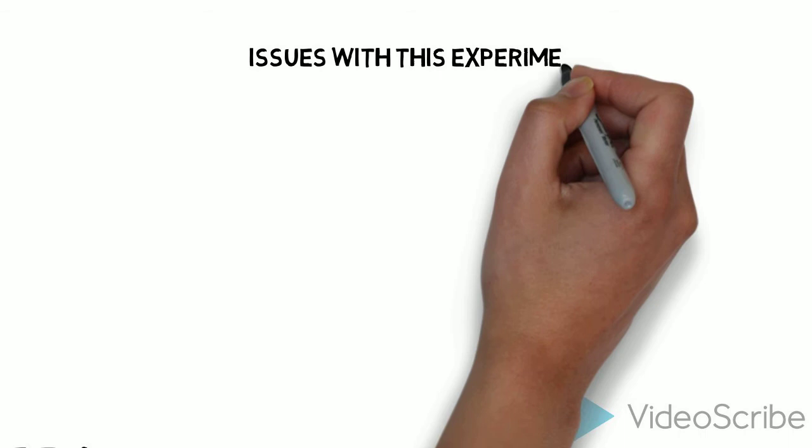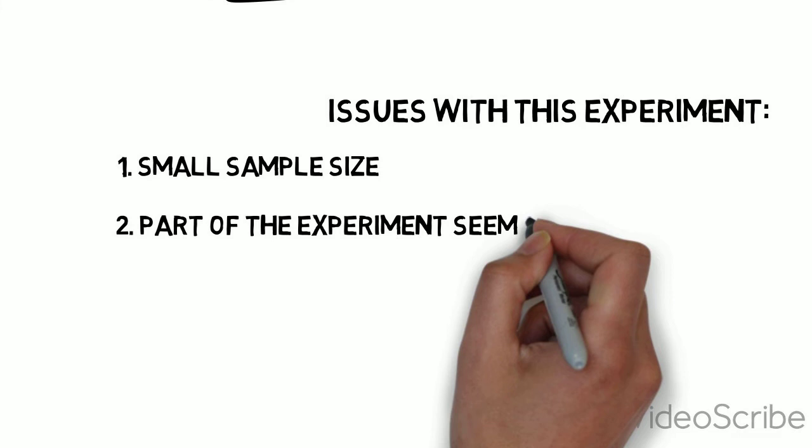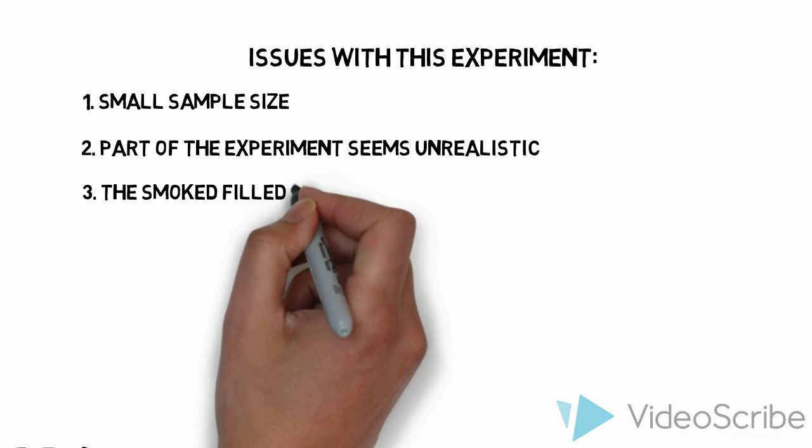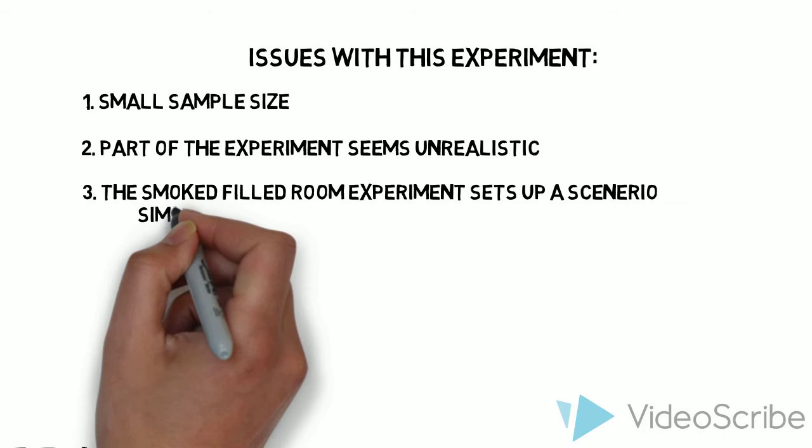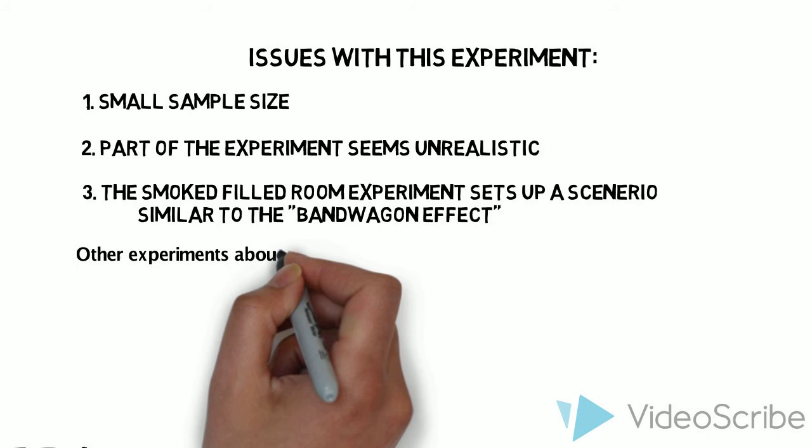There are criticisms saying that the 24 subjects used in this experiment make a fairly small sample size, and the complete inaction of the confederates in the second condition is unrealistic. Also, to me personally, the smoke-filled room experiment is not the best to demonstrate bystander effect, since it kind of sets up a scenario similar to the bandwagon effect, which is people do something primarily because others are doing it, regardless of their own beliefs.